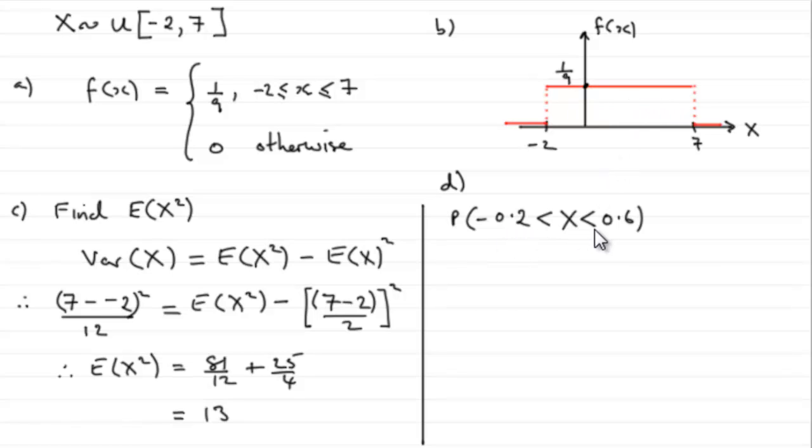So if I was to draw this on, let's just imagine that is the value -0.2, just mark that in, -0.2, and 0.6 just over here. I know it's not drawn to scale, but it just gives me a bit of room to draw this in.